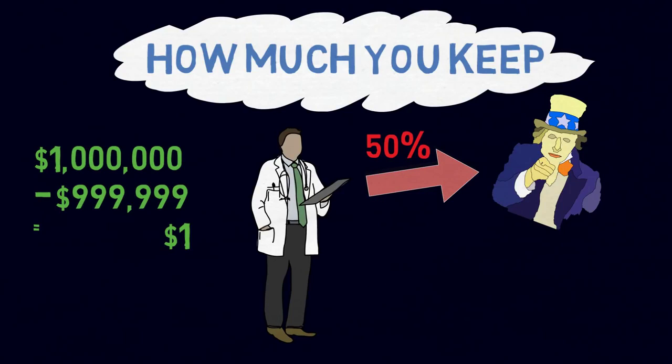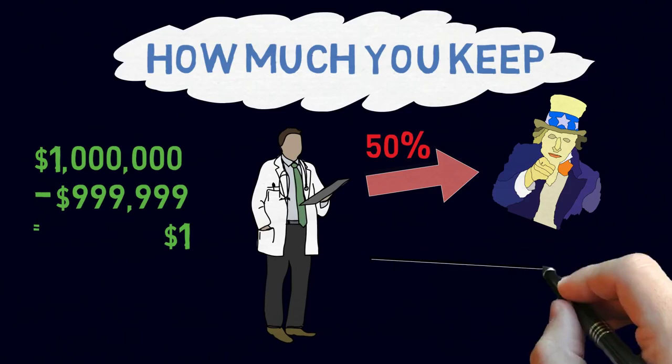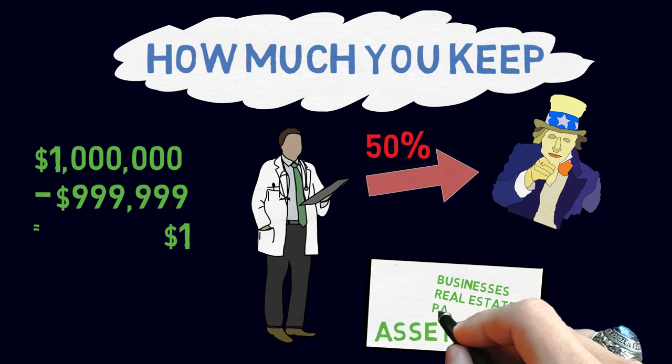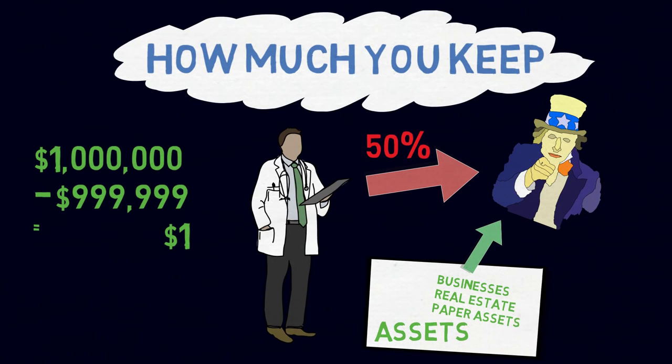You get taxed when you earn, you get taxed when you spend, you get taxed when you save, and guess what, you get taxed when you die. On the other hand, you could operate from the assets quadrant and pay sometimes 0% in taxes. I have doctor friends who are more financially anxious than my absolutely broke friends.